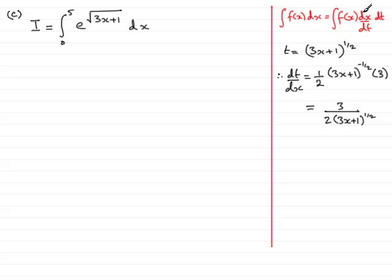Now we wanted dx by dt, so dx by dt becomes the reciprocal of this. It's like turning it upside down, if you like. We get 2 times 3x plus 1 to the power of 1 half, all over 3.